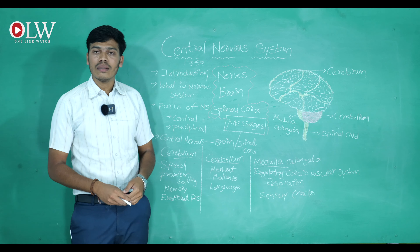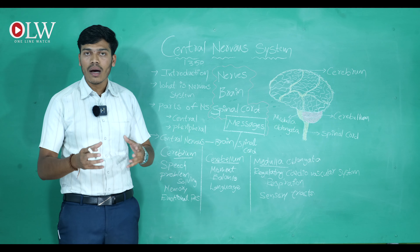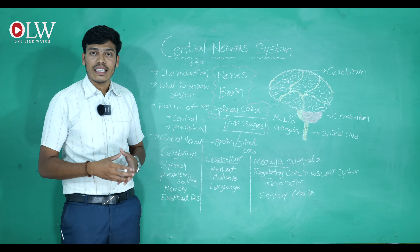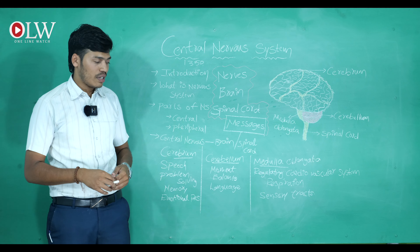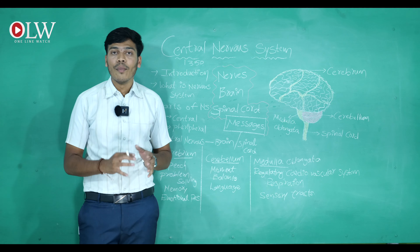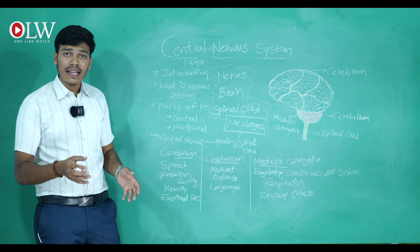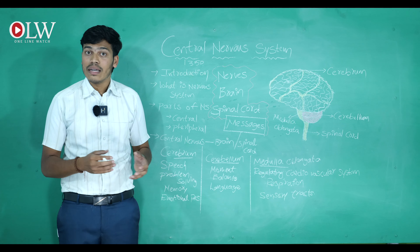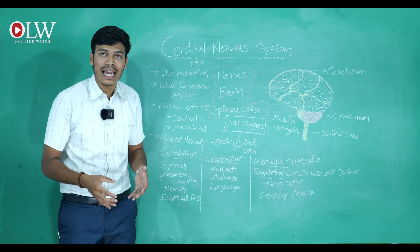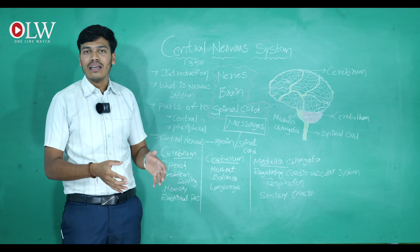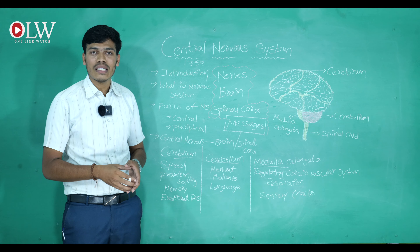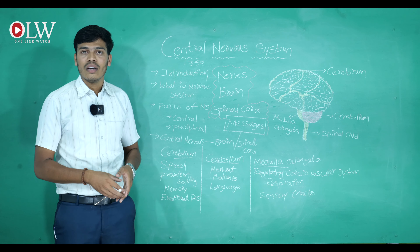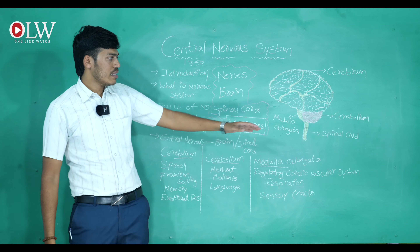The second part is the cerebellum, which is the second largest part of the human brain. The functions of the cerebellum are movement of the human body and balancing of the human body. Many people who have disabilities are not able to handle their body movements — they sometimes lose balance and fall, causing injuries. This happens when the cerebellum isn't working properly.